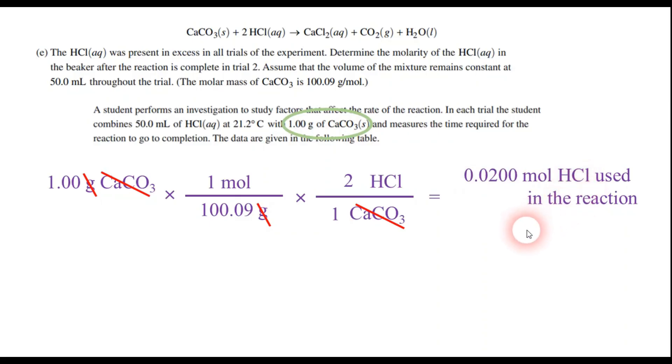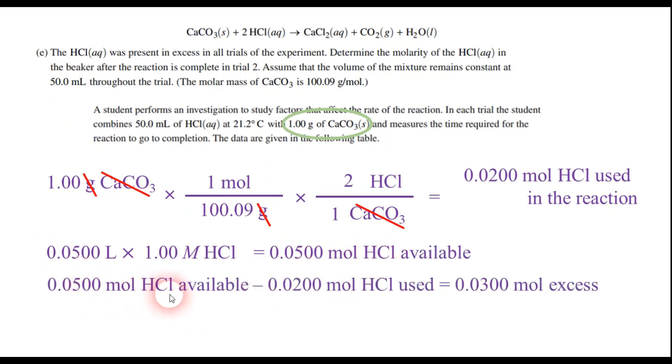Now how many moles of HCl did we have available to us? Well, in trial two, the chart up there said it was one molar HCl. And the problem says it's 50 mils. So that's 0.05 liters. So when you multiply that out, it tells us we had 0.05 moles available. So if we had 0.05 moles of HCl available, and we only used 0.02 moles, that means we have 0.03 moles left, if my math is correct.